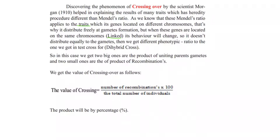Red and long always move together, and white and short together, if they are located on the same chromosome. Only in the case of crossing over can they separate. Then we get a different phenotypic ratio to what we got in the test cross or hybrid cross. In this case, the two larger groups are the product of parental gametes, and the two smaller ones are the product of recombinations — organisms which contain genes exchanged by crossing over.